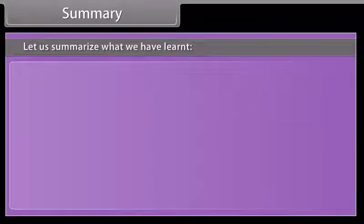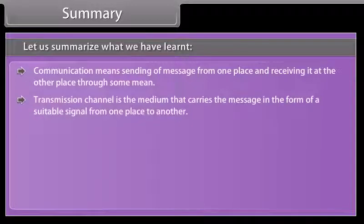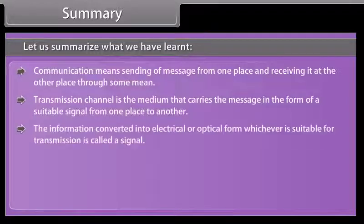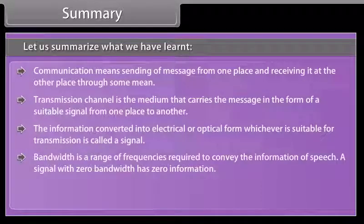Summary. Communication means sending a message from one place and receiving it at the other place through some medium. The transmission channel is the medium that carries the message in the form of a suitable signal from one place to another. The information converted into electrical or optical form, whichever is suitable for transmission, is called a signal. Bandwidth is the range of frequencies required to convey the information of speech; a signal with zero bandwidth has zero information.